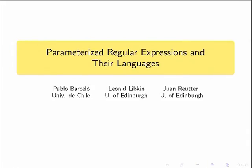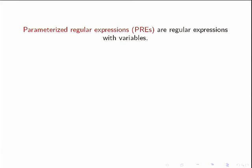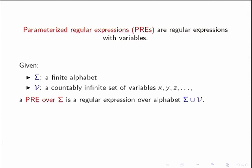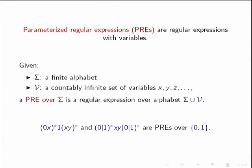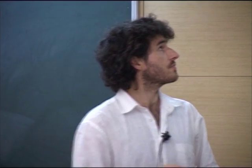Our work with co-authors Leonid and Pablo is about parameterized regular expressions. Parameterized regular expressions are just regular expressions with variables. We work with a finite alphabet sigma — throughout the talk, just the symbols 0 and 1 — and we also consider a set of variables V. So we have as many variables as we want, and we consider expressions over this combined alphabet using sigma and V.